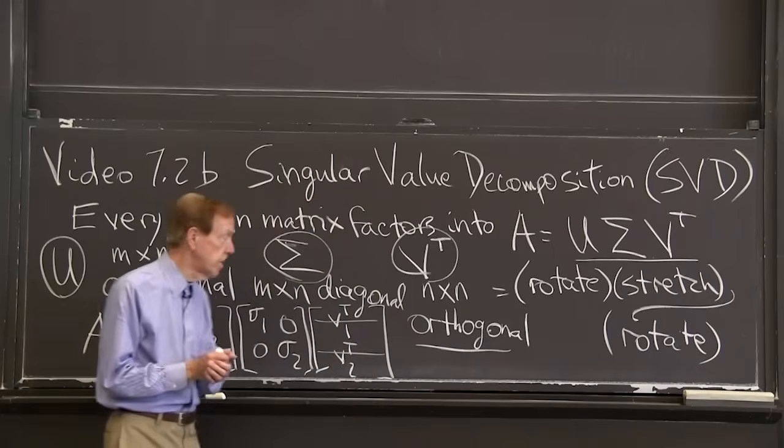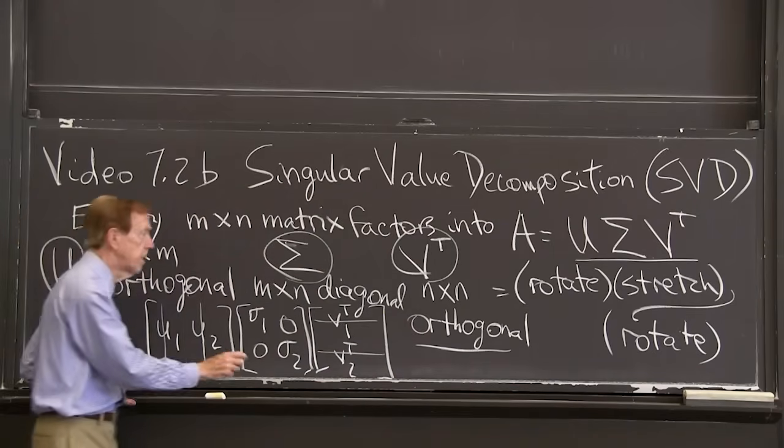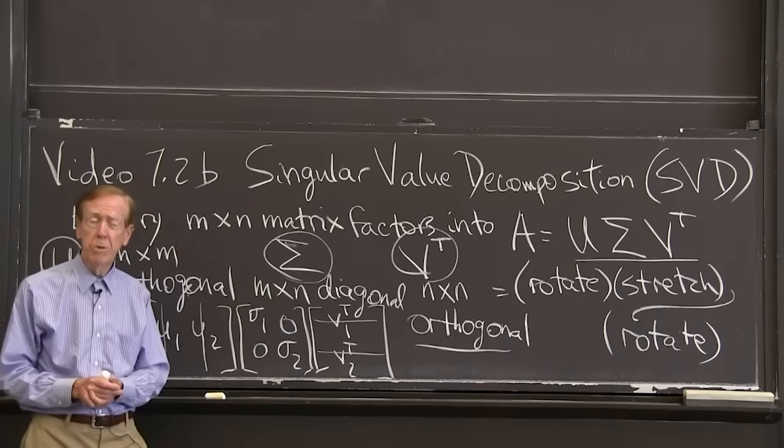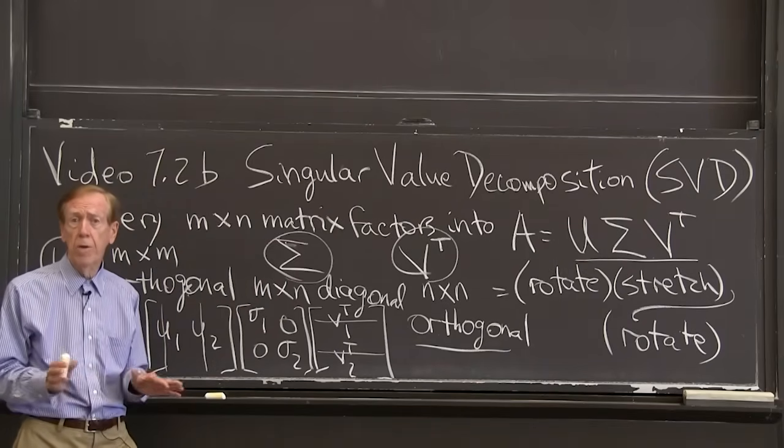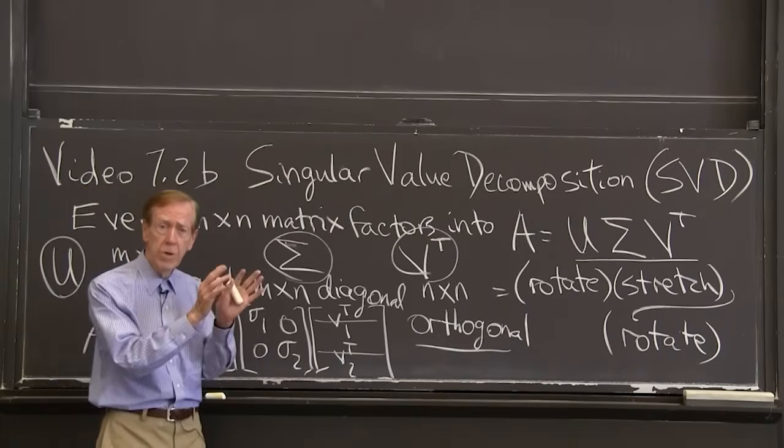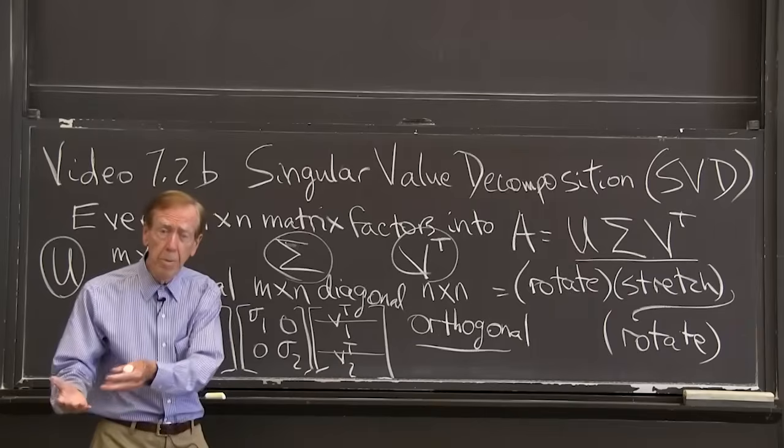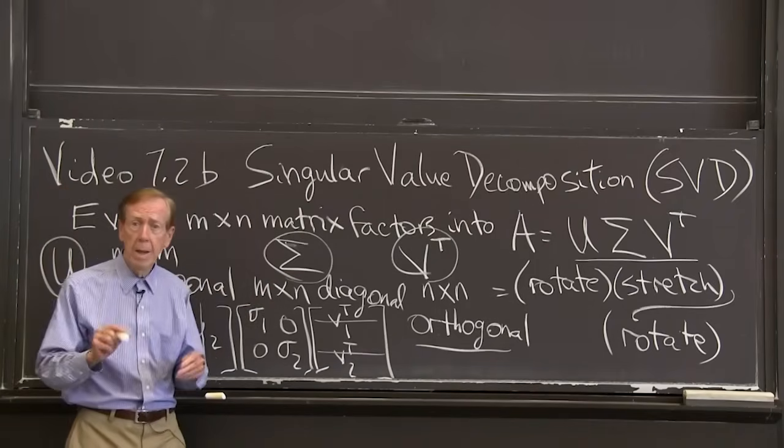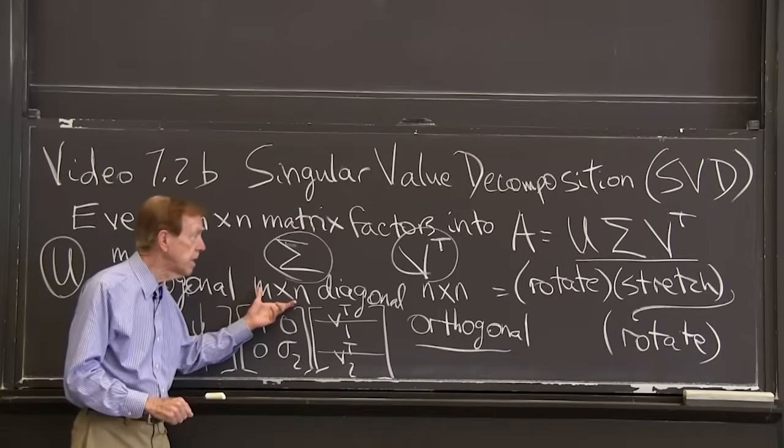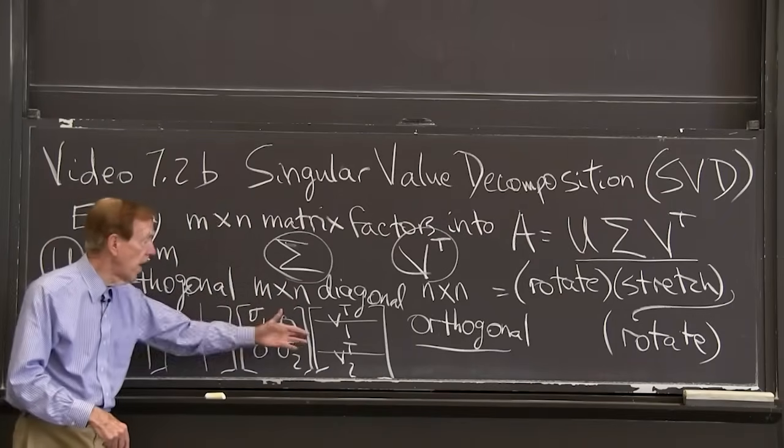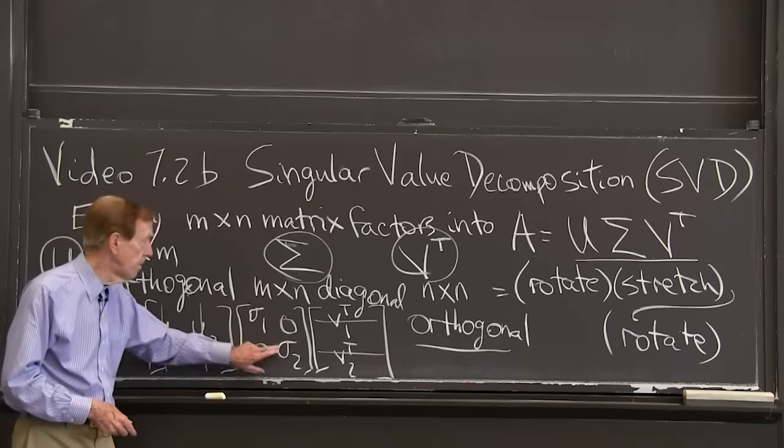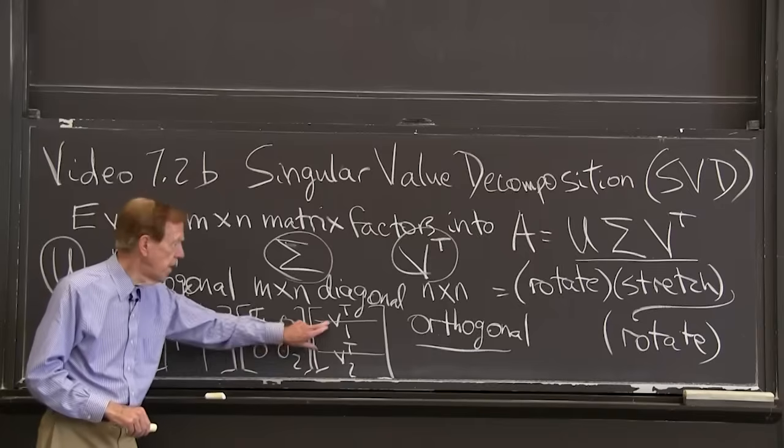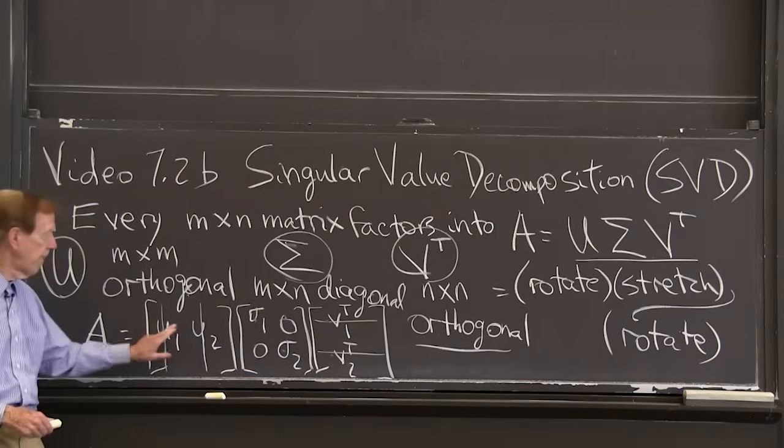The new great advantage is they are orthogonal matrices, both of them. And I can do it for rectangular matrices also. Eigenvalues really worked for square matrices. Now we have an input matrix and an output matrix. Those spaces M and N can have different dimensions. By allowing two separate bases, we get rectangular matrices and orthogonal factors with a diagonal. These numbers sigma, instead of eigenvalues, are called singular values. These are the singular vectors, the right singular vectors and the left singular vectors.